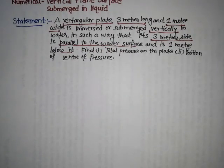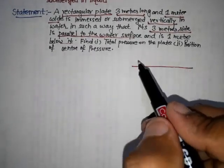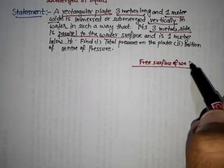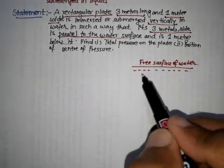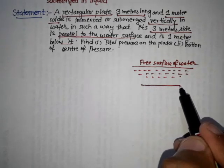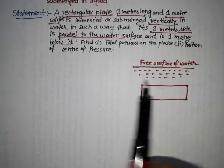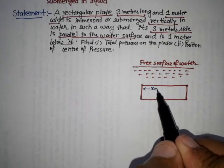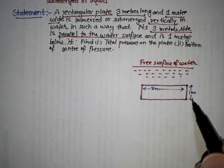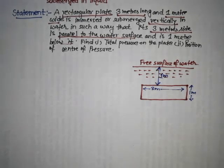On the basis of the given statement, firstly we try to plot the diagram. Here is the free surface of water and this is the liquid. Here the 3 meter side is shown, it is 1 meter wide. According to the statement, this 3 meter side is parallel to the water surface and it is 1 meter below from the water surface.